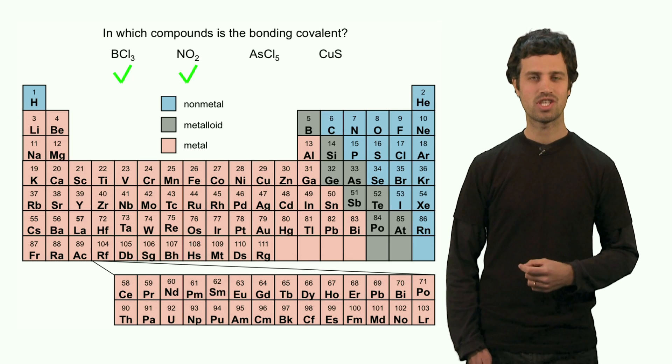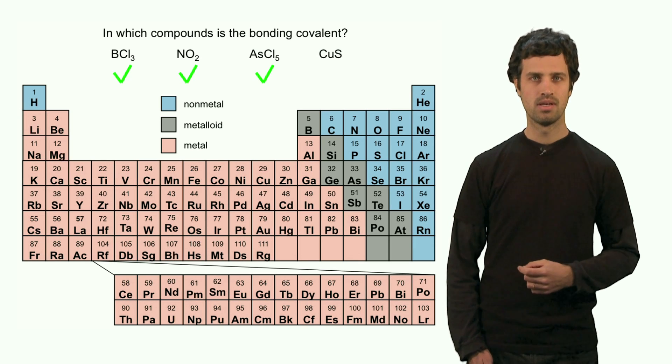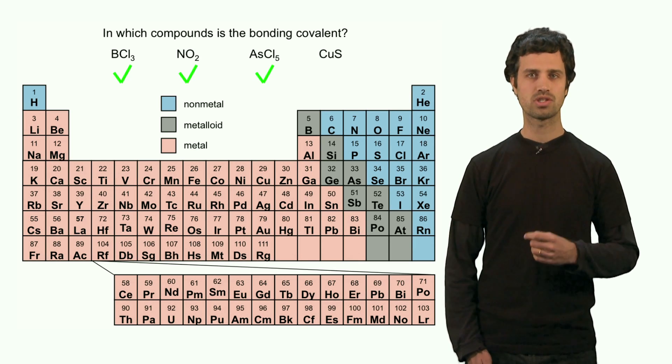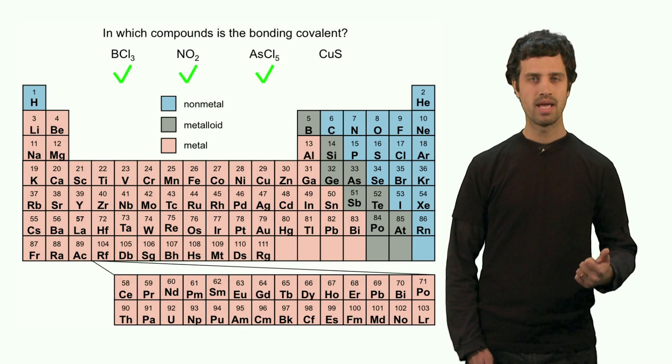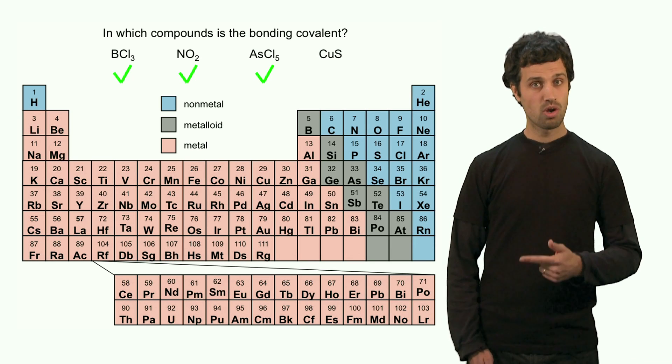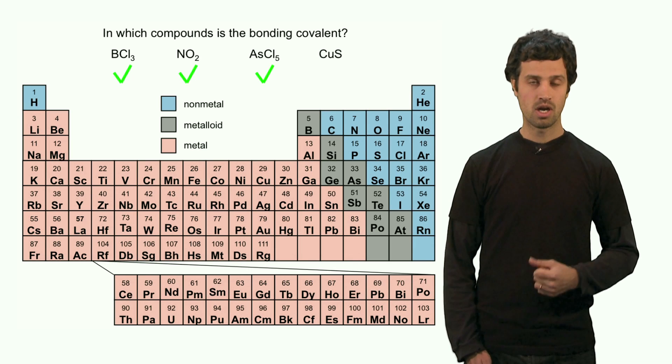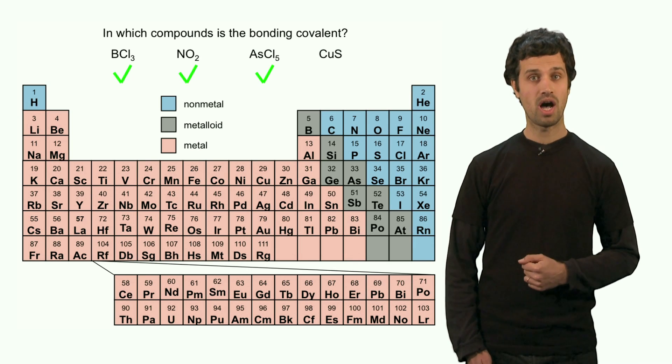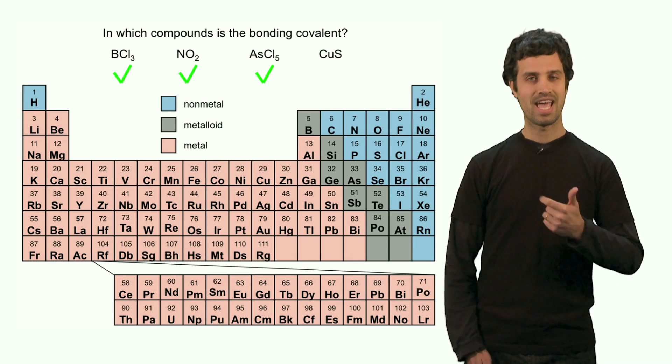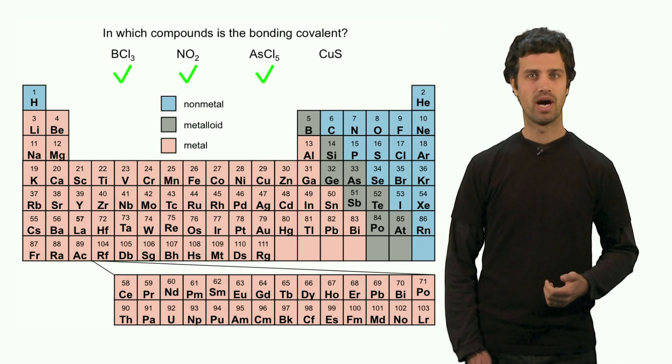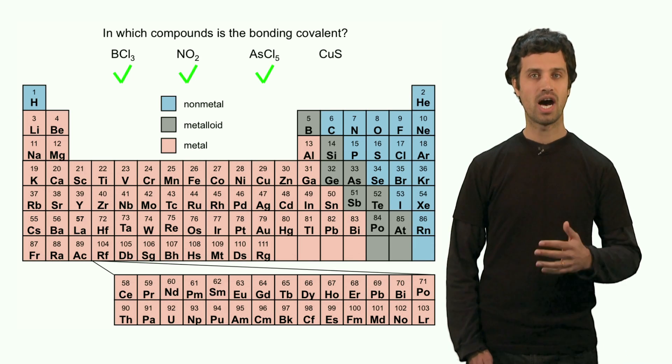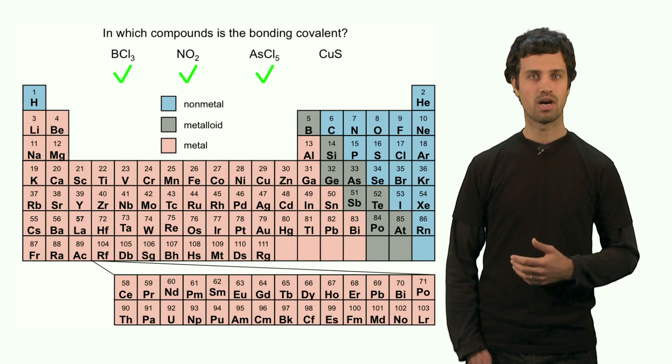The last example is copper sulfide, composed of copper and of sulfur. Sulfur is a nonmetal. Copper, however, is a metal. So this is a bond between copper, which is a metal, and a nonmetal. That is an ionic bond. So the last compound is not a molecule. It's an ionic compound.